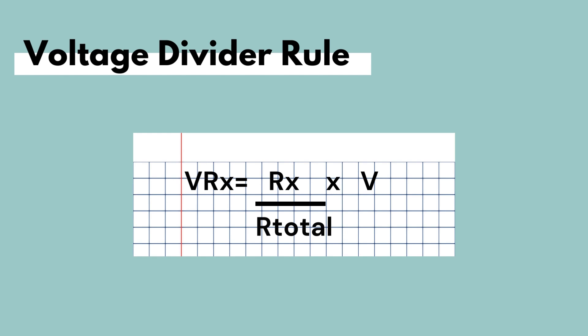The voltage divider rule is given as follows: where Rx is the resistance in a series circuit that we would like to find the voltage across, and R total is the equivalent series resistance.